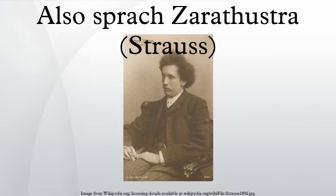Structure: the piece is divided into nine sections played with only three definite pauses. Strauss named the sections after selected chapters of the book: Einleitung, Odesson und Aufgang, Von den Hinterweltlern, Von der großen Sehnsucht, Von den Freuden und Leidenschaften, Das Grablied, Von der Wissenschaft, Der Genesende, Das Tanzlied, Nachtwandlerlied.